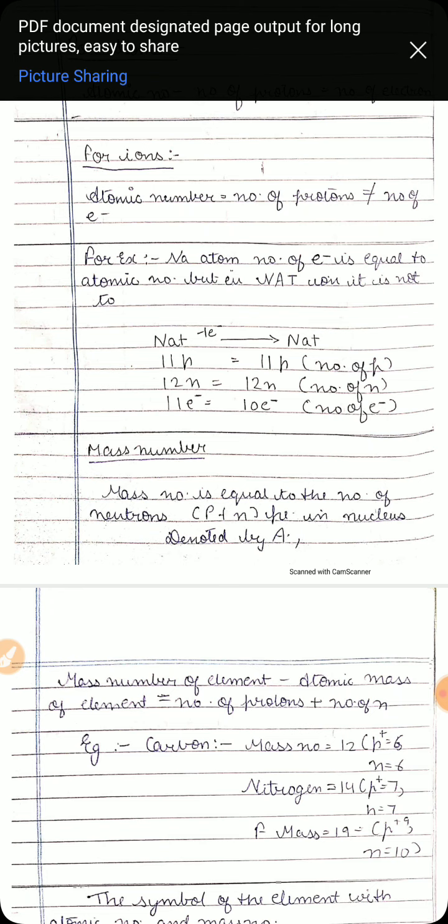One more example: carbon is also found in two isotopic forms — carbon-12 and carbon-14. Similarly, chlorine also occurs in two isotopic forms with mass numbers 35 and 37.